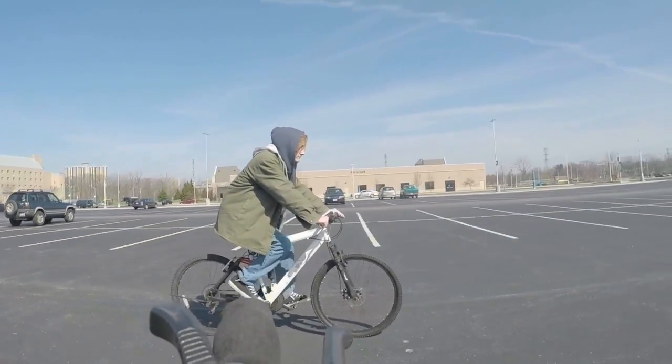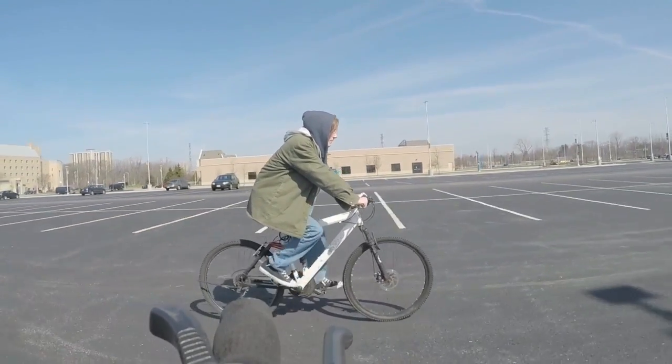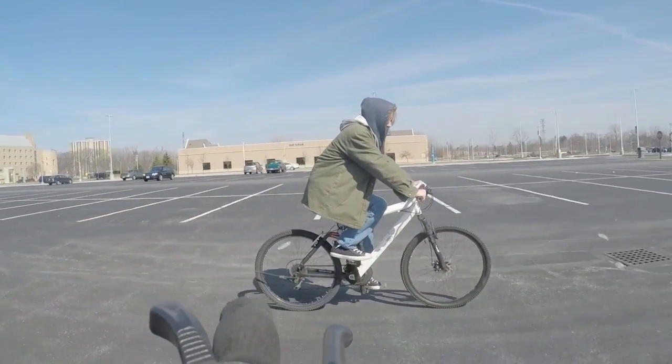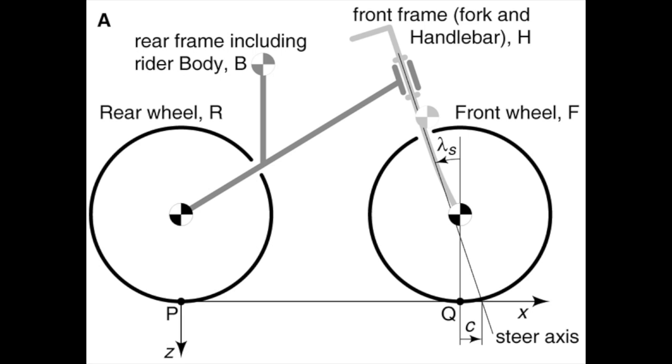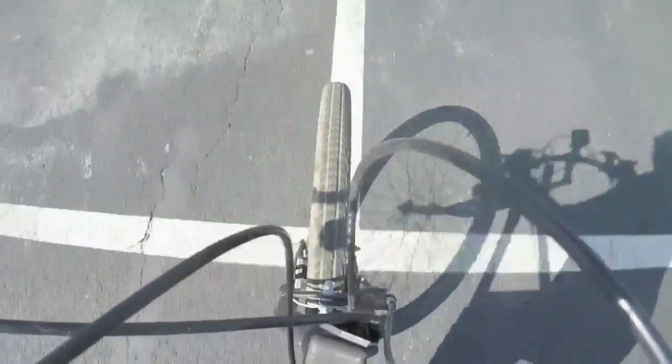This tendency for the front wheel to regain its position underneath the center of mass is due to the three components of a bike's physics mentioned earlier. The steering axis of a bike has a backwards slant. The front wheel of the bike touches the ground a little bit behind this axis. This idea is visualized more clearly while riding along the line of a parking lot. When the bike leans to the right, the force from the ground on the bike causes the wheel and the handlebars to turn to the right as well, helping the bike regain the wheel's position back under the center of mass.